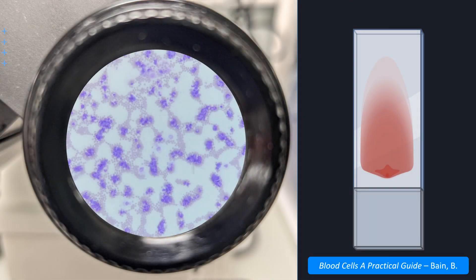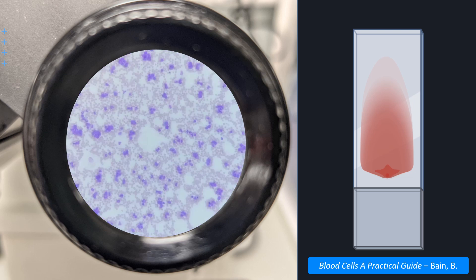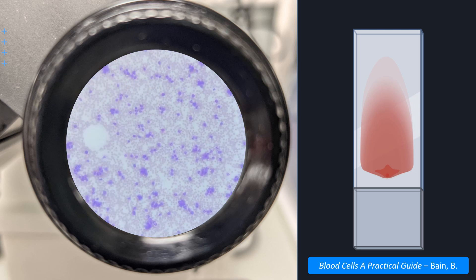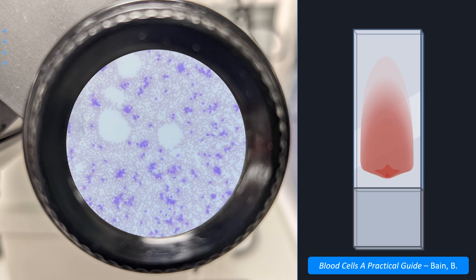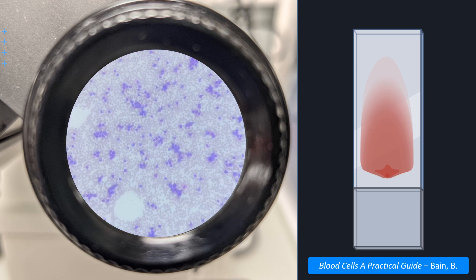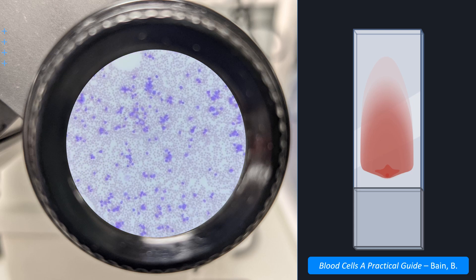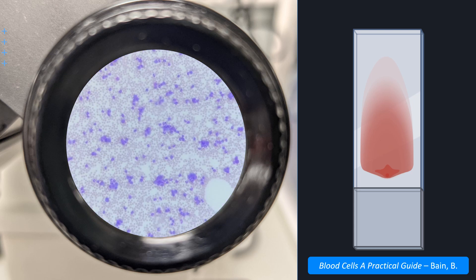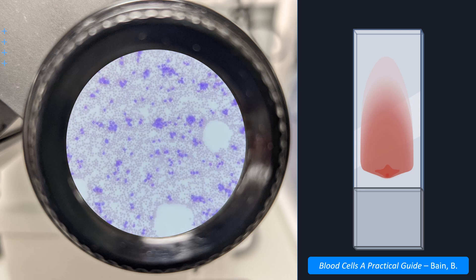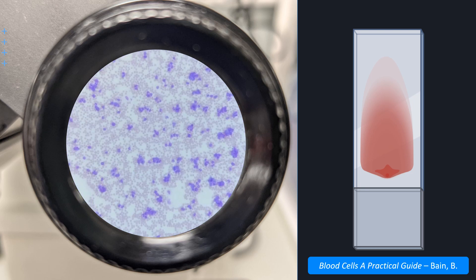Start by looking at the blood film under low power to see the quality of the smear and the staining. A link will pop up in the top right hand corner for a video on how to do this, so if you're unsure, please do check it out. I'll also leave a link in the description below.